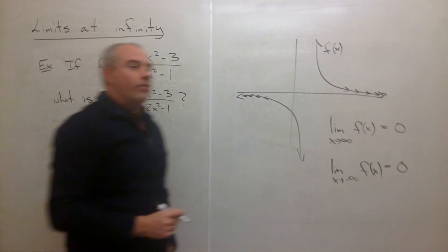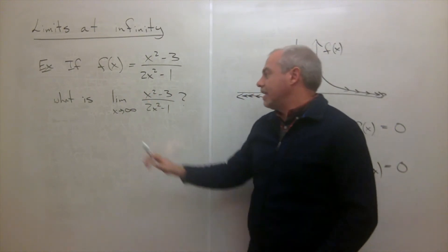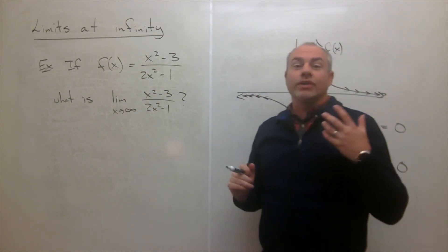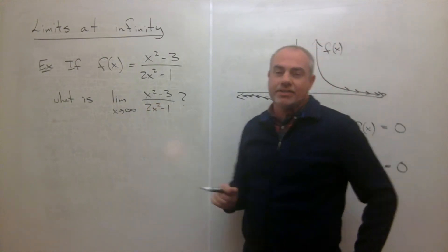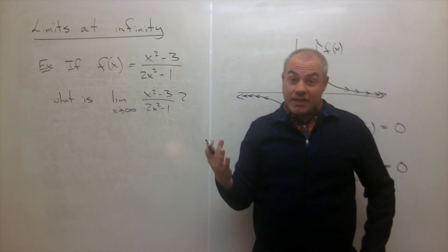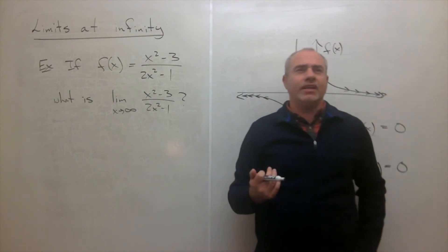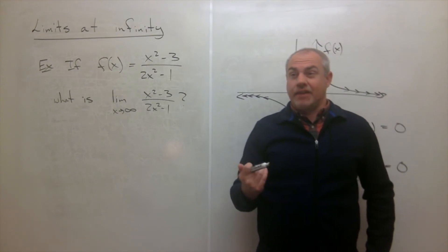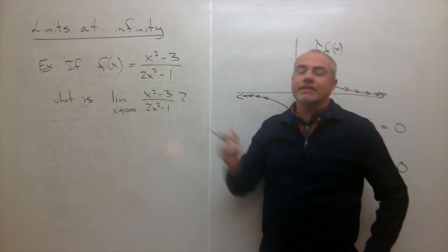The way we go about finding a limit like this — first of all, we have to be careful because we can't just plug in infinity. If I plug in infinity, I get infinity squared minus three on top, which is sort of infinity, and two times infinity squared minus one on the bottom, which is also sort of infinity. So I get infinity divided by infinity. What is that? It's actually called an indeterminate form, so I can't take the limit that way. But that doesn't mean I can't take this limit.